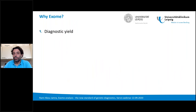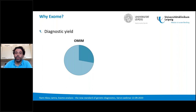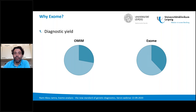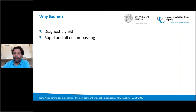The diagnostic yield is much higher with exome. Using a very big panel like the OMIM panel — about 5,000 genes — we have a diagnostic yield of a little bit more than 25% across all questions. If we do an exome, we get between 10 and 20% more diagnostic yield than using a panel. Although the OMIM panel should theoretically contain all relevant genes, it does not in practice. There's no need for too much discussion on the higher diagnostic yield, at least from our perspective. But there are also other reasons why we have moved to exome diagnostics — one of them is that it is rapid and all-encompassing.